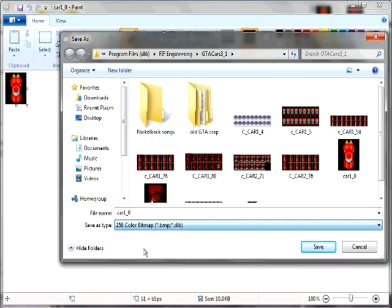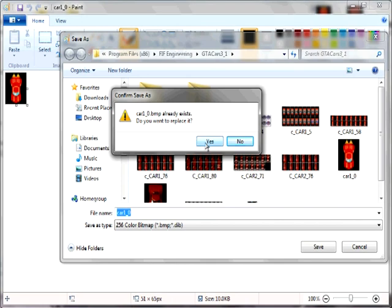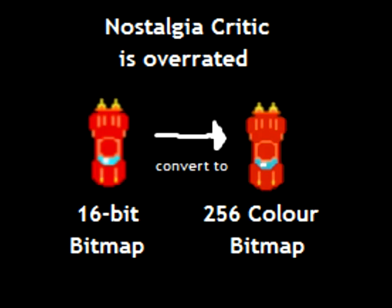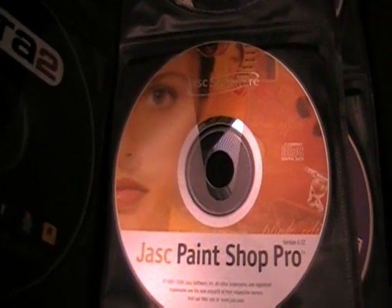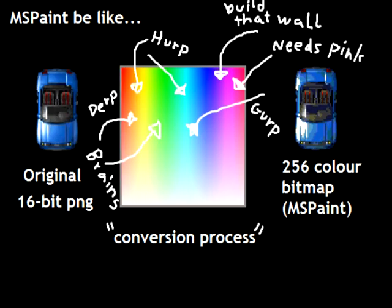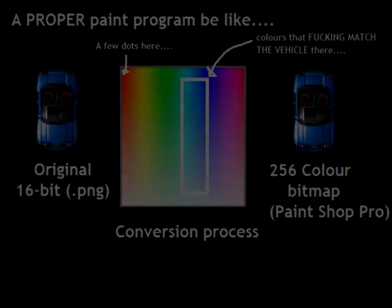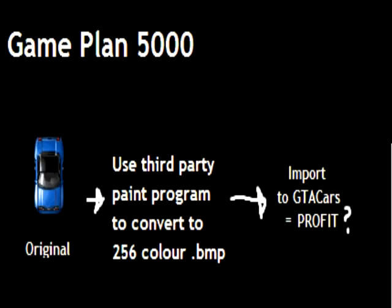You might want to avoid using MS Paint when converting a 16-bit bitmap image to a 256-color one, because MS Paint kind of fucking sucks at converting bitmaps. This is where you might need a third-party paint program like Photoshop or Paint Shop Pro. MS Paint has this habit of converting a color palette to 8-bit using parts of every color, including colors that aren't included in the vehicle. Programs like PSP and Photoshop can actually recognize the colors in an image and properly convert an RGB color palette from 16-bit to 256-color to correspond to a specific area of a color palette, allowing you to create a 256-color bitmap image without fucking up the colors too much, thus allowing you to import the sprite in GTA Cars.